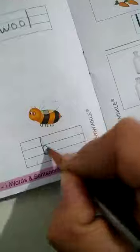Bee, B-double E, bee. Say and write all these words in your book. Come to next page.